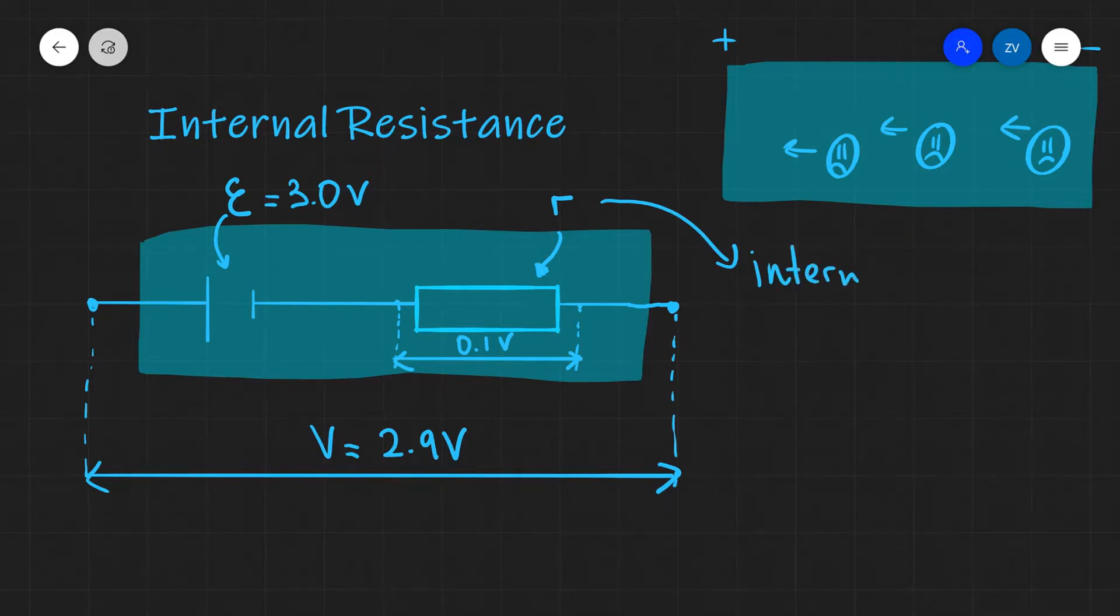So this over here is our internal resistance, and this will be responsible for the loss of voltage or the loss of potential difference across the terminals of the cell.